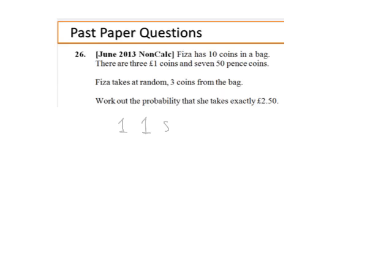With this question, we're listing the different ways we can make £2.50 using three coins. It has to be two £1 and a 50p, but we can reorder those in order of the three coins that we take. We'll find the probability of each. You'll see a certain symmetry with the numbers in the numerator and denominator, and we'll add those together to get our final answer.